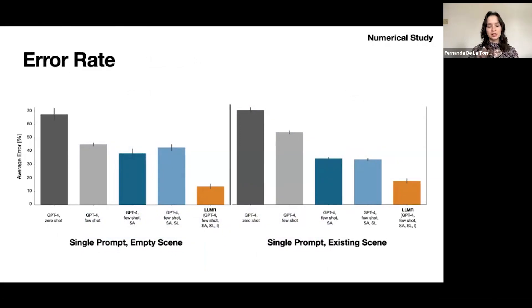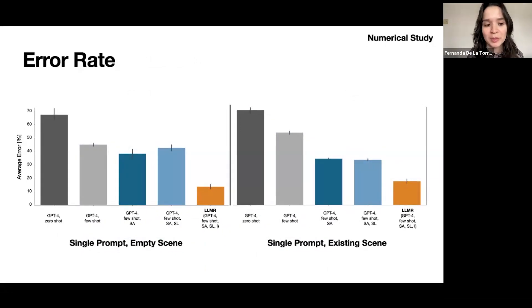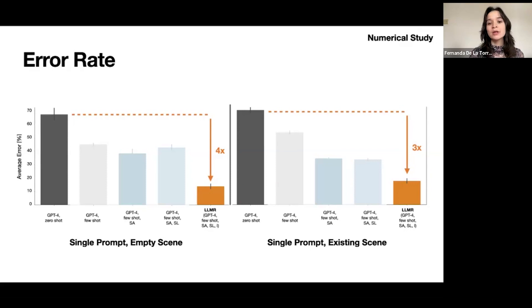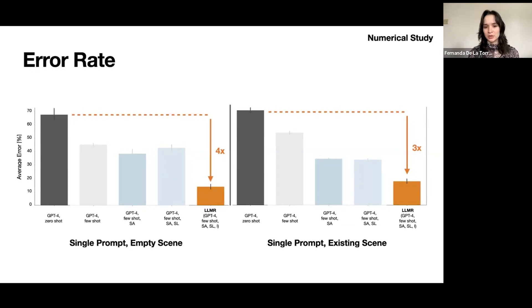To test this, we turned on and off each of the modules in LLMR to see how performance improves. Here we're plotting average error on the y-axis, and on the x-axis, we have different variations of LLMR. There's only GPT-4 with zero shots, so no examples. We then tested how it would perform with a few examples, and then we turned on the scene analyzer, and then both the scene analyzer and the skill library, and finally, the scene analyzer, the skill library, and the inspector. On the left, we have performance for single prompts, and on the right, we have performance for single prompts as well, but existing scene, so empty scene versus existing scene. What we find is that as we turn on each module, performance improves in most cases, and when all modules are turned on, performance improves dramatically, so it goes from an error rate of almost 70 to under 20. So it's a four times improvement in the case of an empty scene, and a three times improvement in the case of an existing scene.